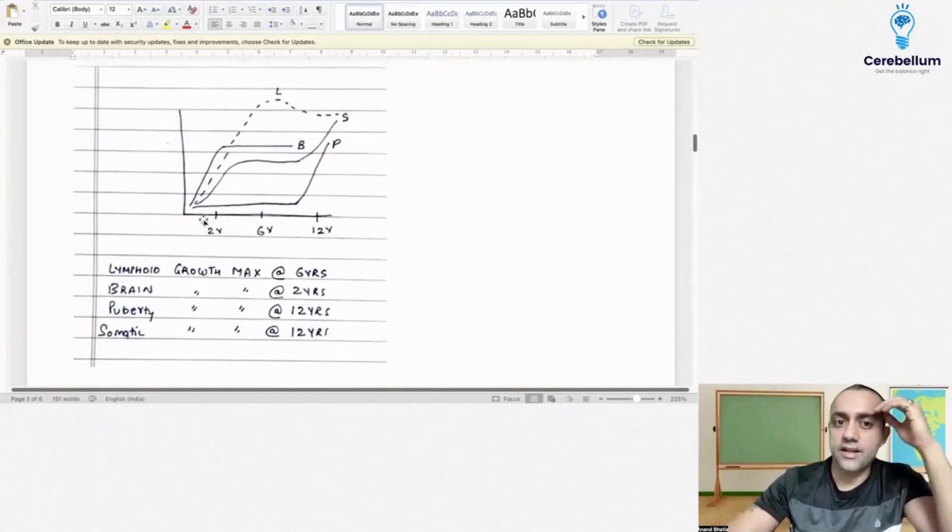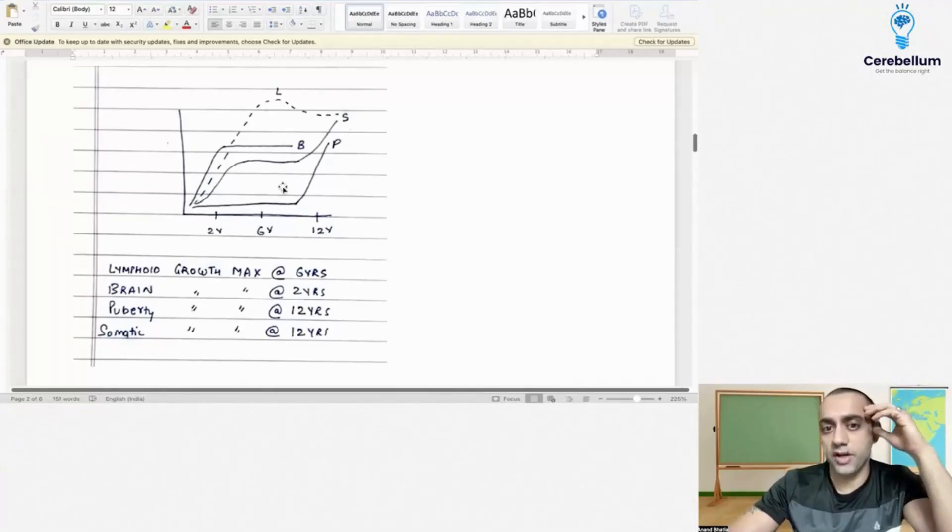This question, a simple question regarding growth charts - A, B, C, D was given regarding all the growth. Two years, six years, and twelve years are important. Twelve-year-old: we have two peaks - puberty maximum comes by twelve years, somatic growth maximum by twelve years, and lymphoid growth maximum by six years.